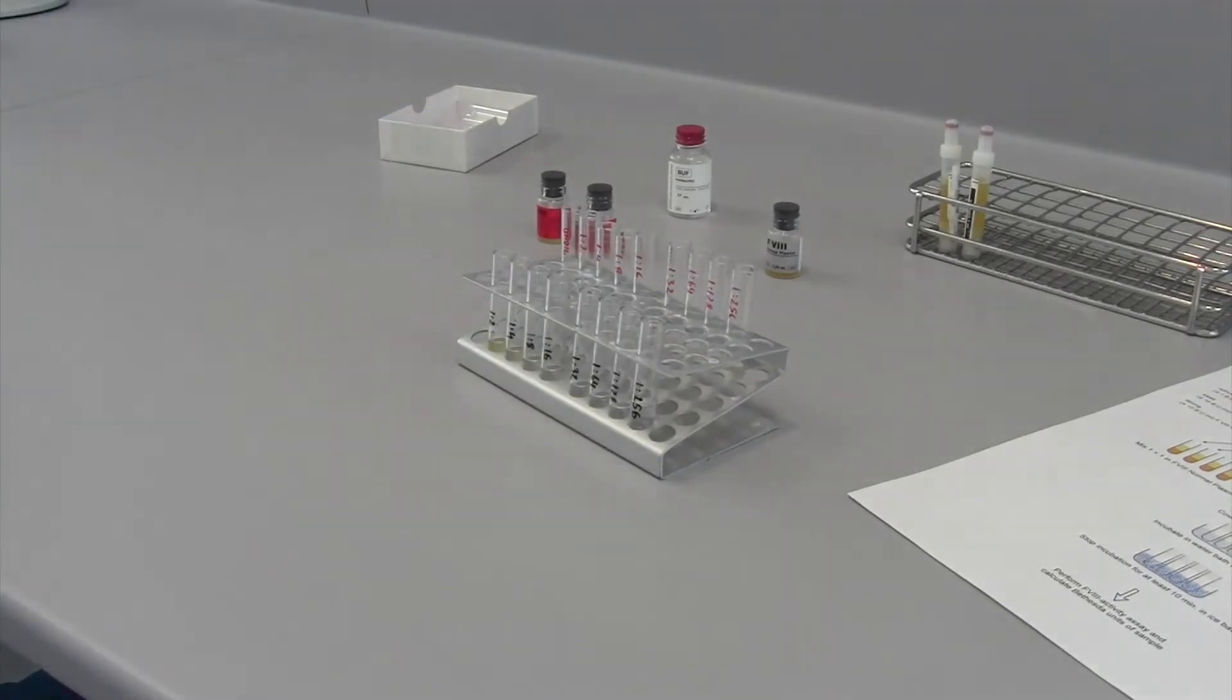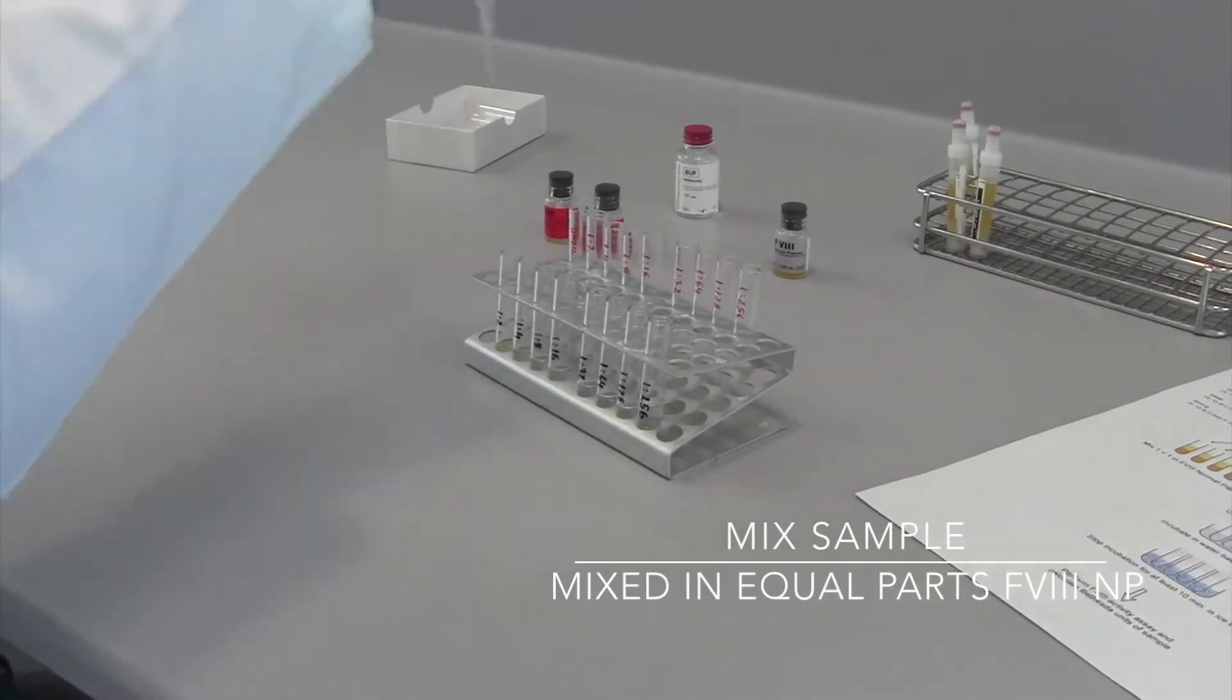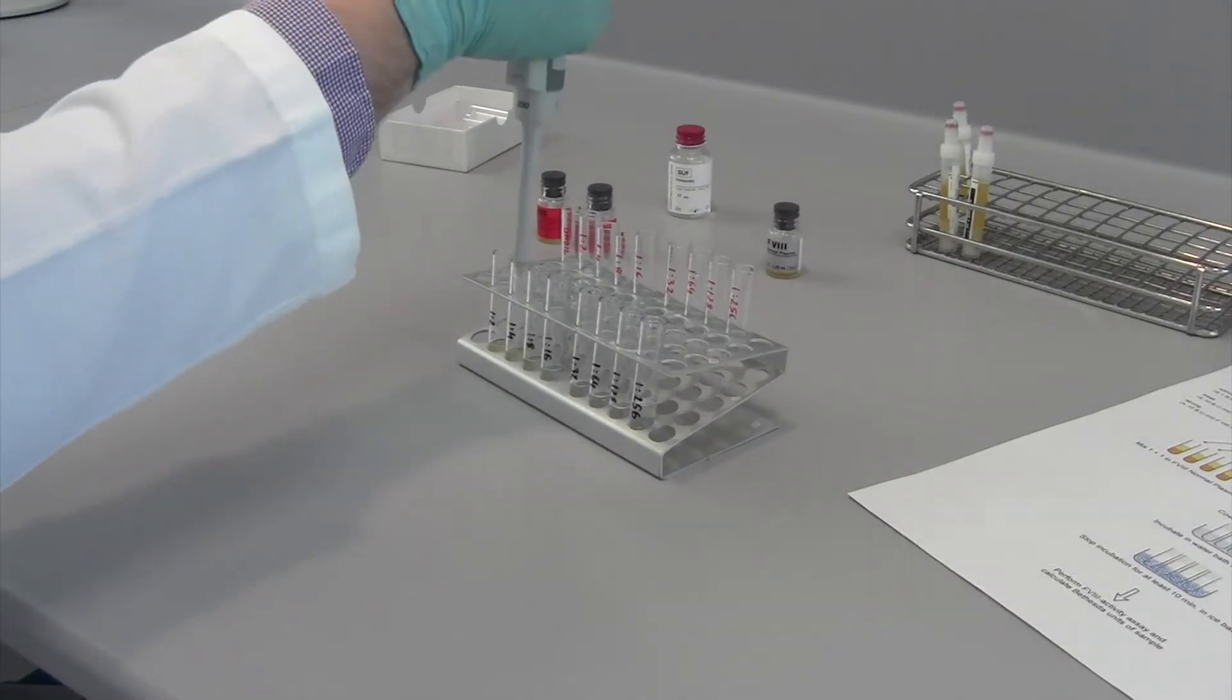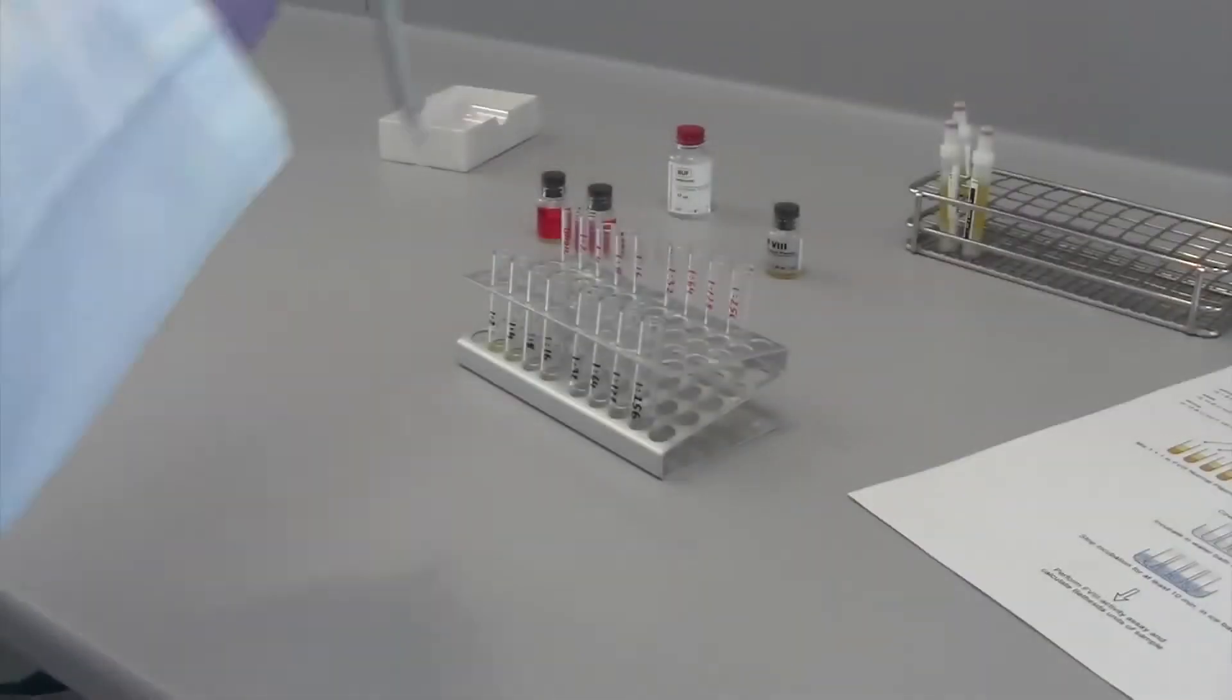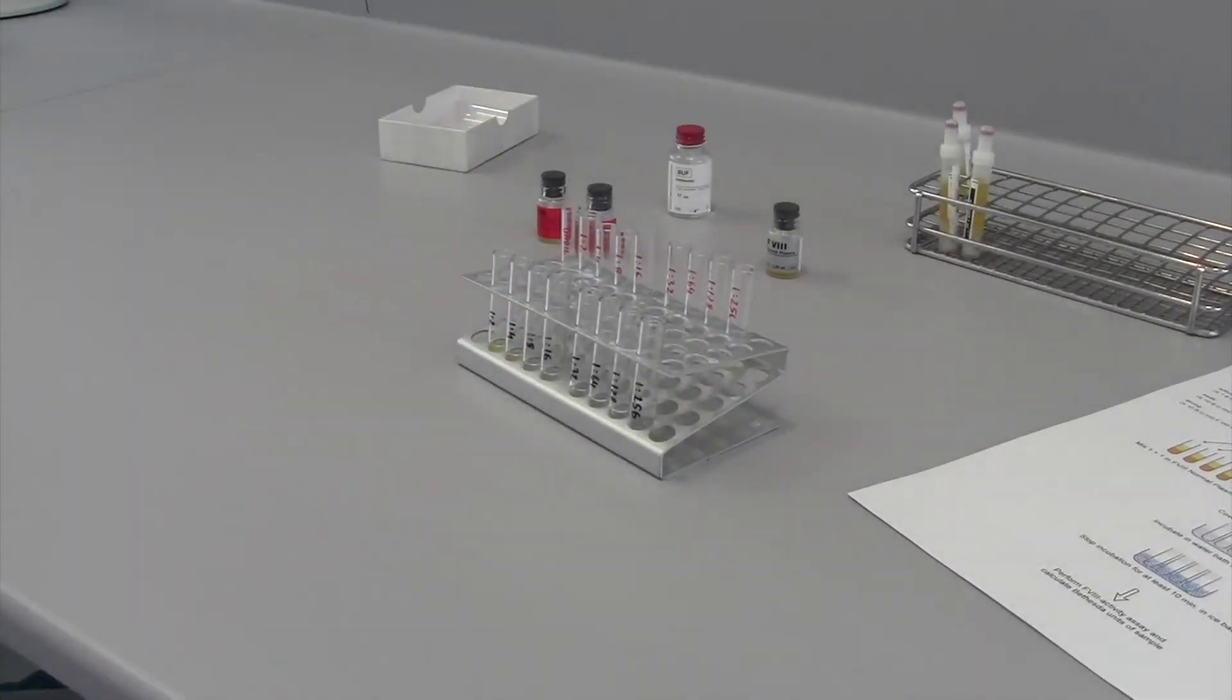For the undiluted samples, here indicated in red, add equal volumes of 100 microliters of your plasma sample to the Factor VIII normal plasma. Now, add equal volumes, in this case 100 microliters, to the respective tubes that already contain Factor VIII normal plasma.